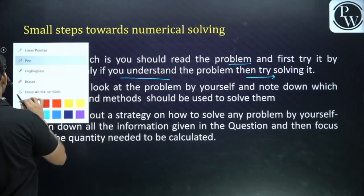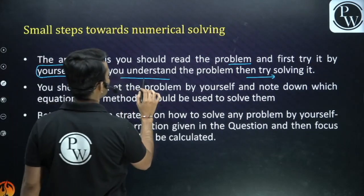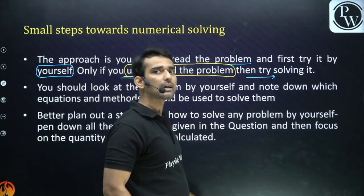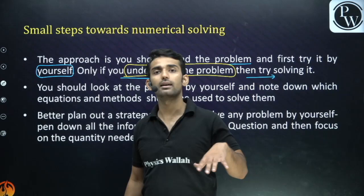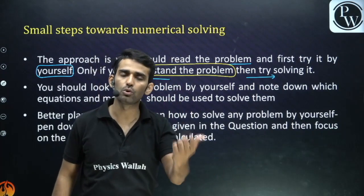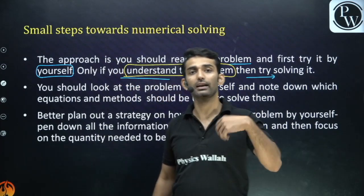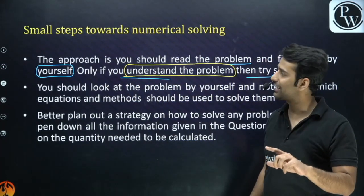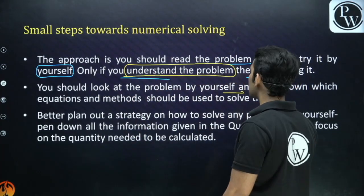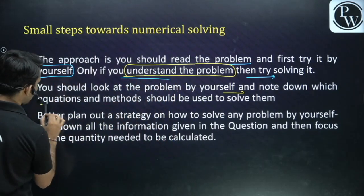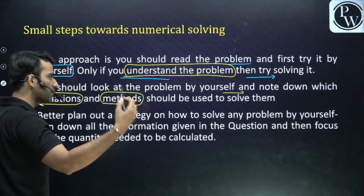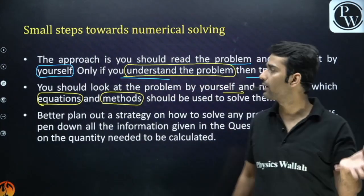The first step is to understand the problem. The basic problem with students in physics is they don't understand the problem. You should be clear about what is given and what has been asked. Only if you know what to do will you get how to do it. Look at the problem yourself and note down which equations and methods should be used — which equation of motion, which trigonometric formulas, which integration will be used.